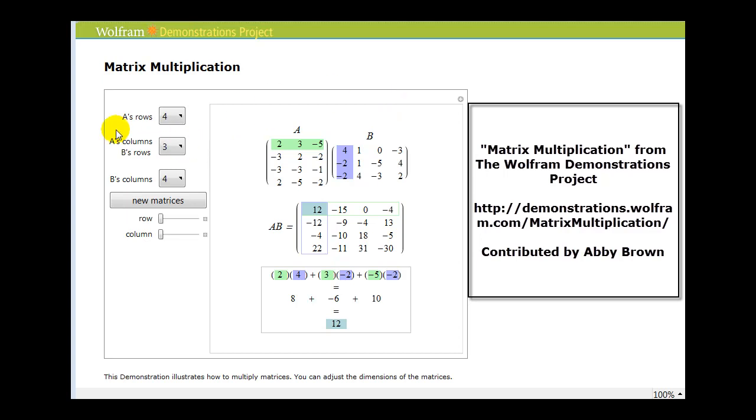The first thing you should notice over here on the left is that in order to multiply two matrices, the number of columns in matrix A must be the same as the number of rows in matrix B. If they weren't the same, we would not be able to multiply the matrices together.